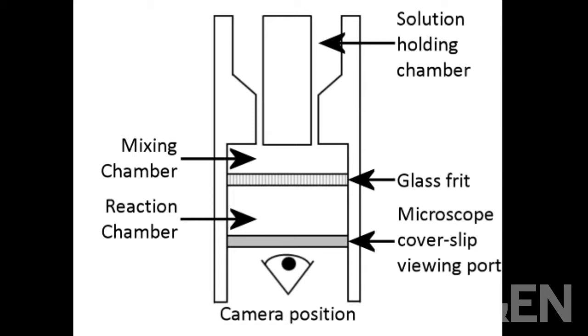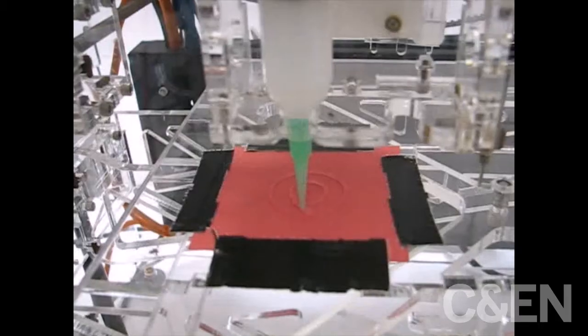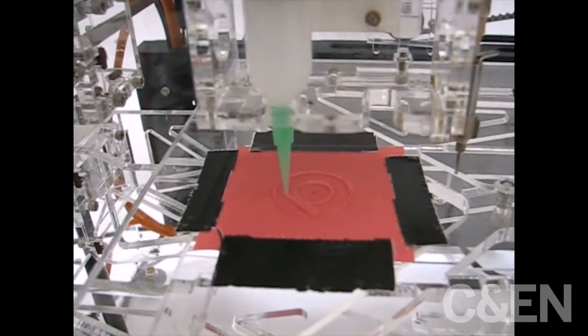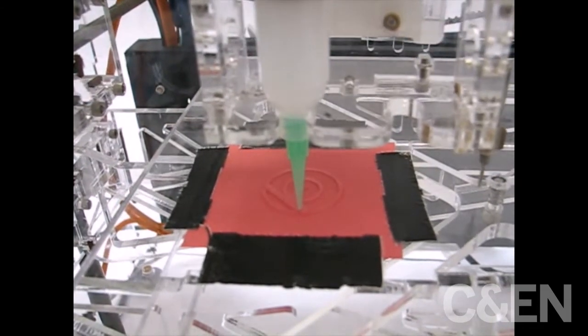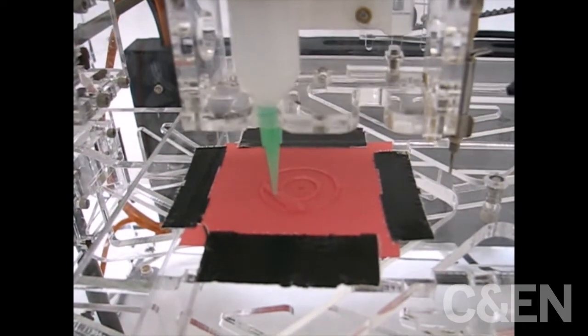To do this, they plan the structure of their desired chemical reaction vessel with computer-assisted design software. Then, they load the blueprint into the 3D printer, which builds the object layer by layer.